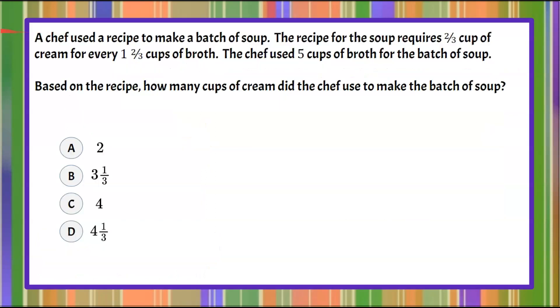Here we're given a chef used a recipe to make a batch of soup. The recipe for the soup requires two-thirds cup of cream for every one and two-thirds cup of broth. The chef used five cups of broth for the batch of soup.